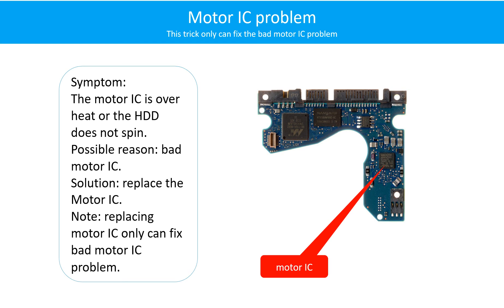Motor IC problem. Symptom: the motor IC is overheat or the hard drive does not spin. Possible reason: the motor IC is bad. Solution: replace the motor IC. Note: replacing the motor IC only can fix the bad motor IC problem. If the hard drive PCB or the hard drive itself has another problem, replacing the motor IC will not help.